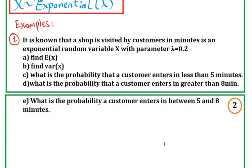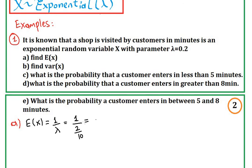Let's start with part A — finding the expectation. We derived in part 1 of the video series that the expectation of X is 1 over lambda. Our lambda is 0.2, and 1 over 0.2 equals 1 over (2/10), which is 10 over 2, which equals 5. So the expectation of X is 5, meaning the average customer enters in 5 minutes.